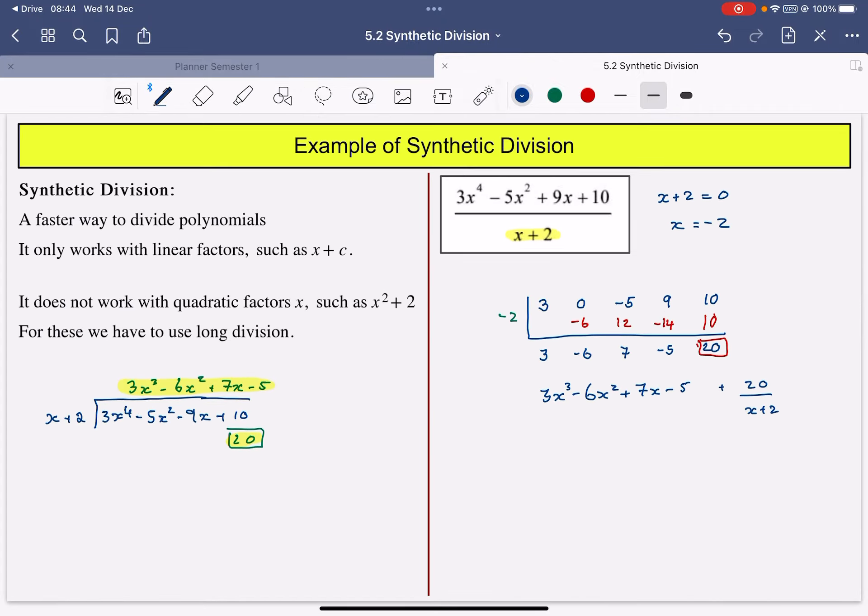And let's just compare that with my long division. So right here we can see that the two highlighted parts, they're exactly the same. And my remainder, 20, is exactly the same with the long division.